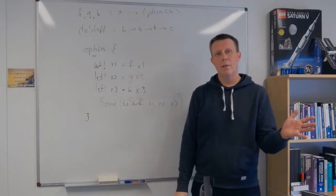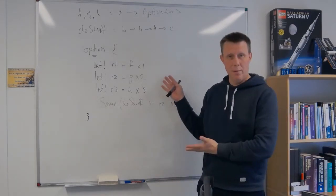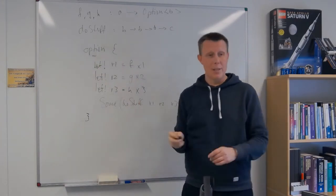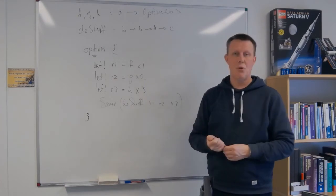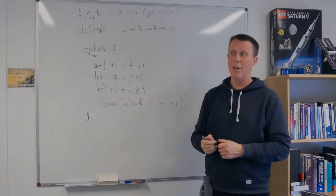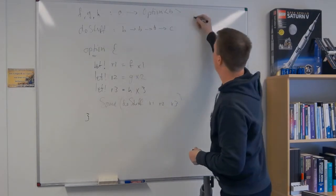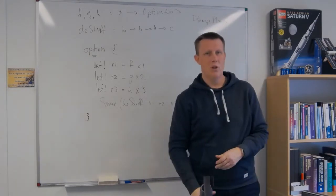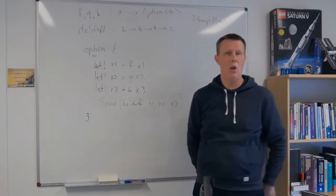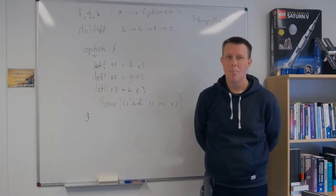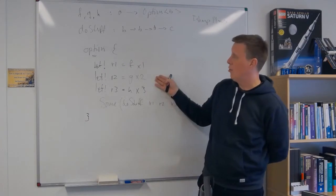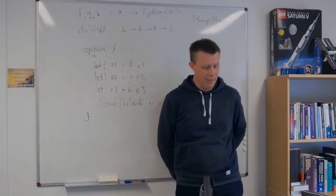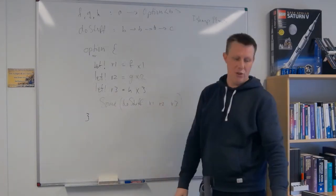Now if you go to F-sharp interactive and try this out, which I think you should do, this won't work. The reason is that for some weird reason they have decided not to have an option computation expression in the standard library. However there is an F-sharp library called F-sharp plus which has it. And that's a great library. There's loads of nice functional stuff in that library. Or if you just wait a few more minutes I will show you how you can actually implement this option computation yourself.